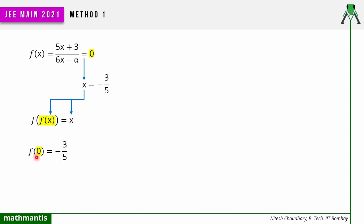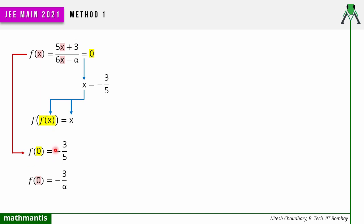Now we can easily find the value of α, because we know the value of f(x) at one point, that is x = 0. We put x = 0 into f(x), giving f(0) = 3 / (−α) = −3/α. We also know f(0) = −3/5. Comparing these two values, the value of α is nothing but 5.